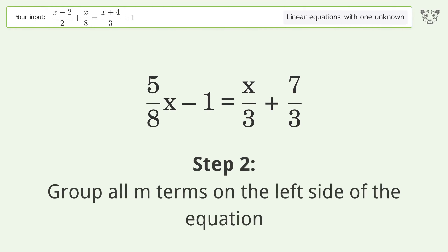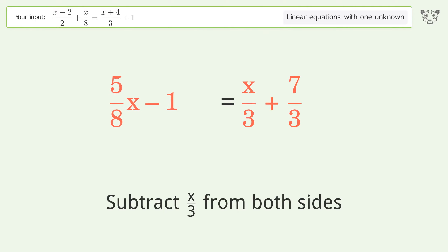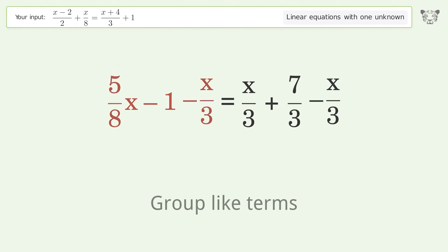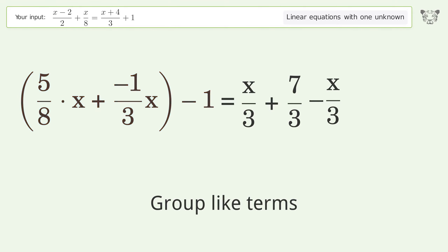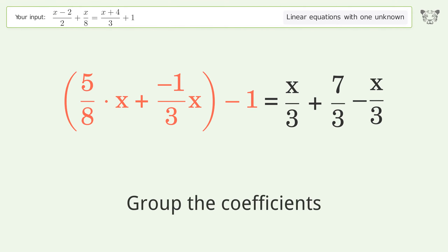Group all m terms on the left side of the equation. Subtract 10 over 3 from both sides. Group like terms, then group the coefficients.